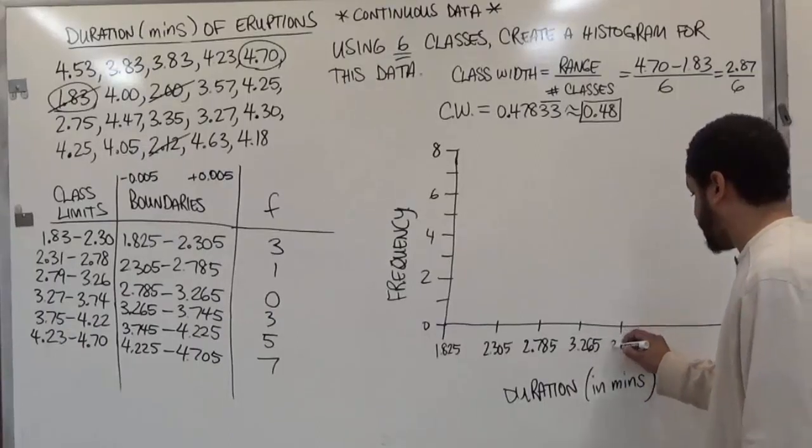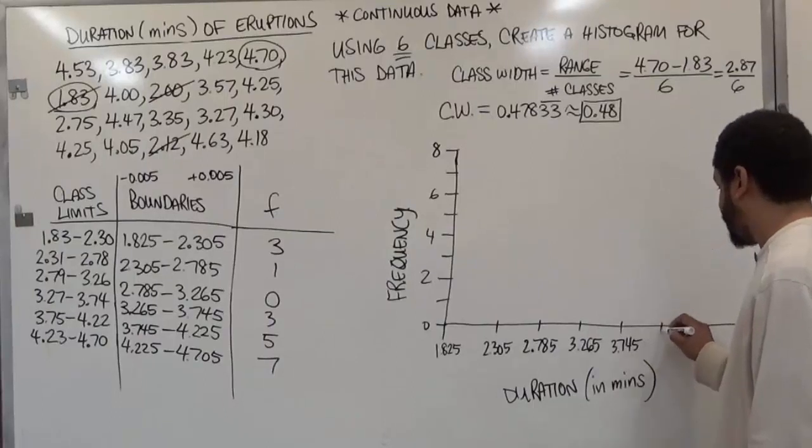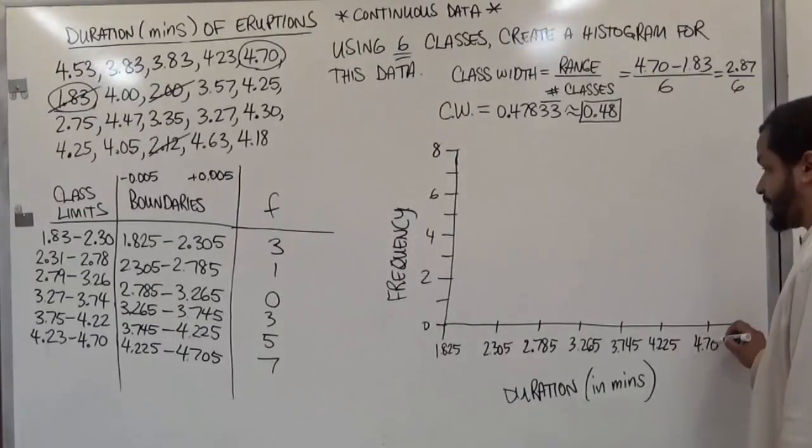The following one is 3.745. The following is 4.225. And finally, the final point is 4.705.